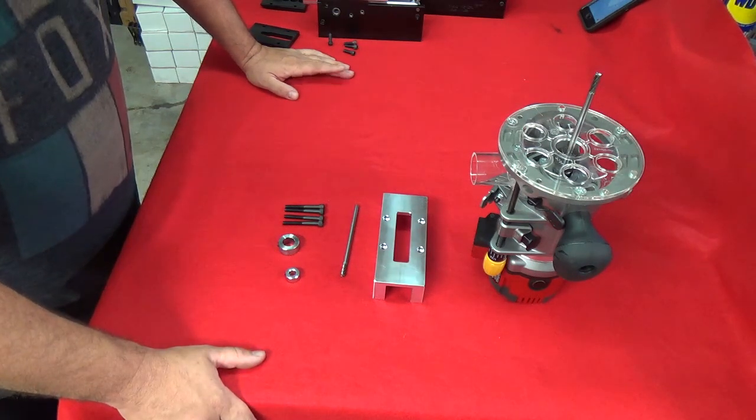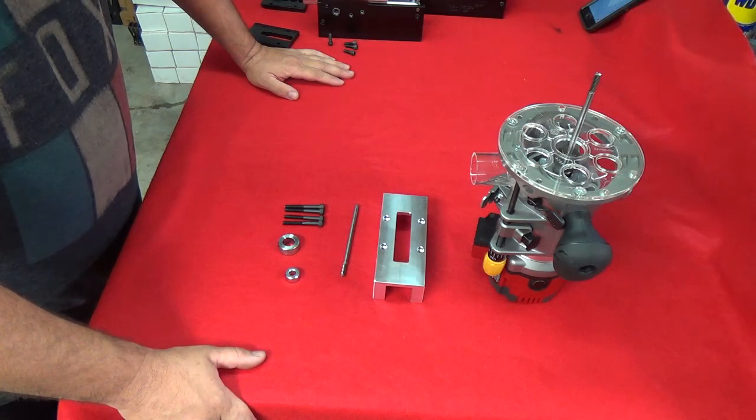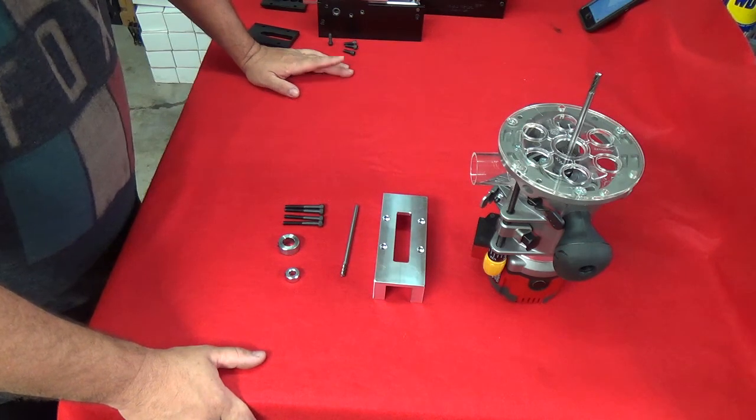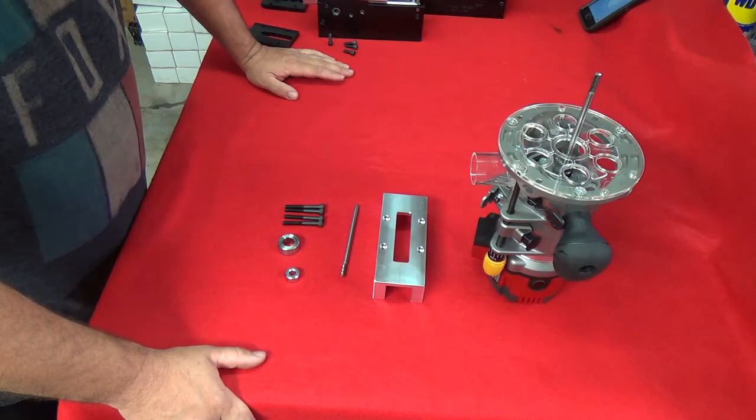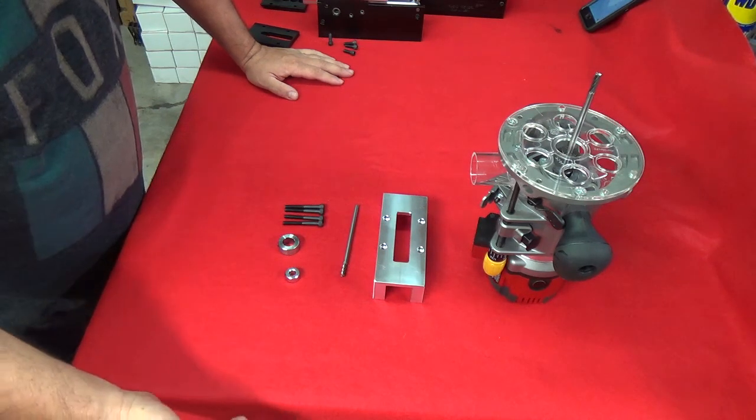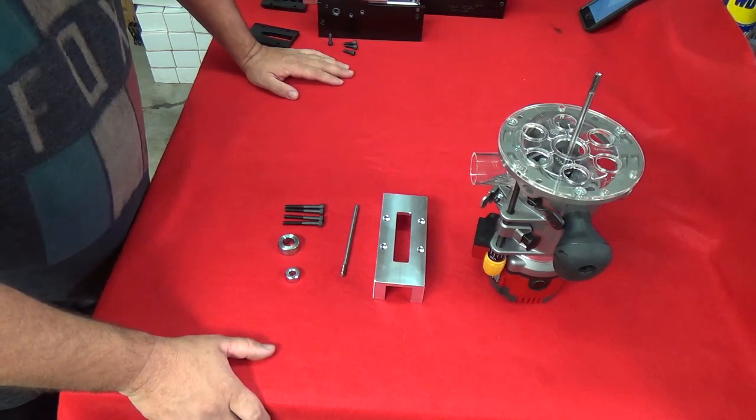Any more questions feel free to give us a call. You can order these router tables and our jigs on ar15upperreceiverparts.com you can also get them on vitaminctactical.com.